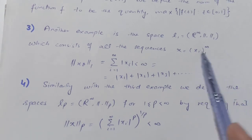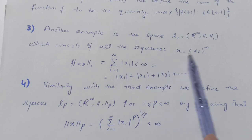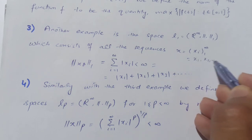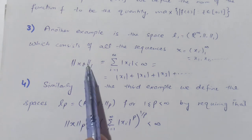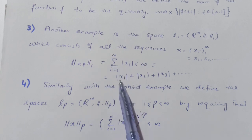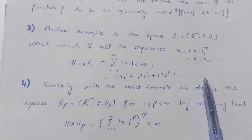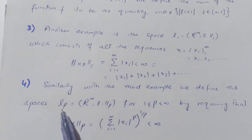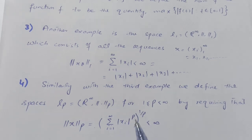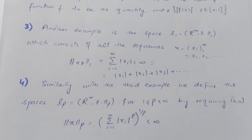Another example is the space l¹ defined on R^∞. Here x = (xᵢ) where i varies from 1 to infinity, i.e., x = (x₁, x₂, …). The l¹ norm is ||x||₁ = |x₁| + |x₂| + |x₃| + ⋯, the sum of absolute values. Lastly, the most important example is the lp space, where the norm is defined as ||x||p = (Σ|xᵢ|ᵖ)^(1/p).